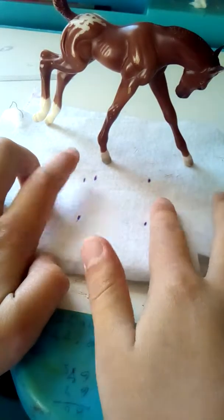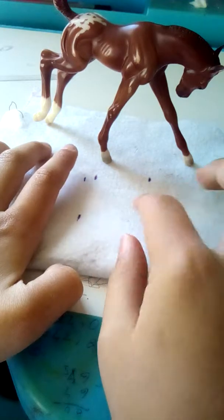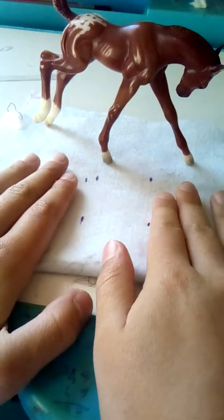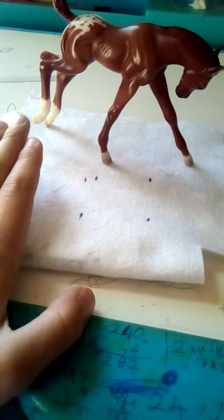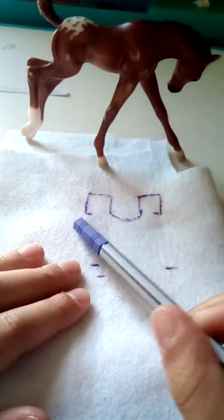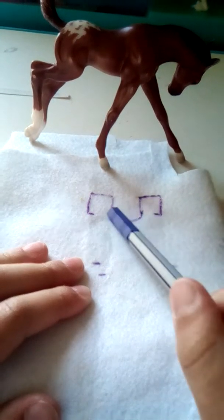You can make the marks further up or further down depending on how wide or how long you want the foal's blanket to be. Where there are these two lines here, these little two lines, draw this shape.